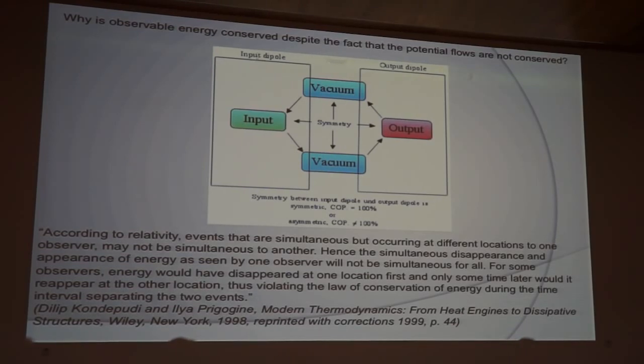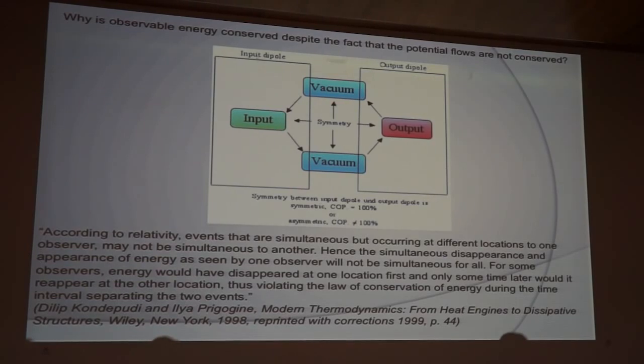Here is a comment from Prigogine that I would like to read. According to relativity, events that are simultaneous but occurring at different locations to one observer may not be simultaneous to another. Hence, the simultaneous disappearance and appearance of energy as seen by one observer will not be simultaneous for all. For some observers, energy would have disappeared at one location first and only sometime later would it reappear at the other location, thus violating the law of conservation of energy during the time interval separating the two events. The reason why I am mentioning this is that I just want to demonstrate that it is possible to explain the reason for the conservation of energy in another way.